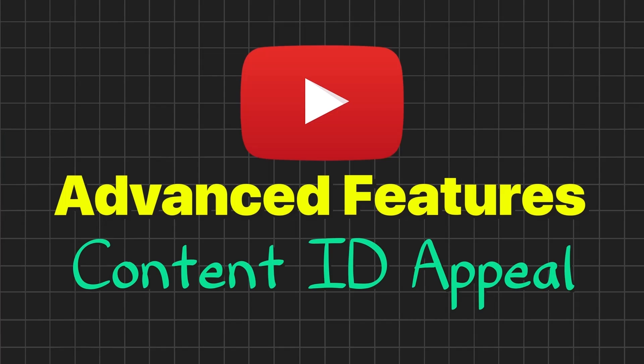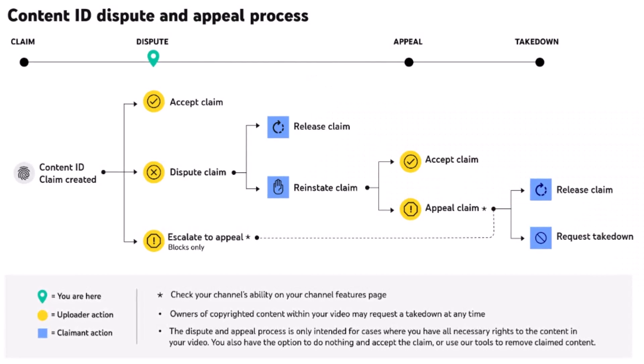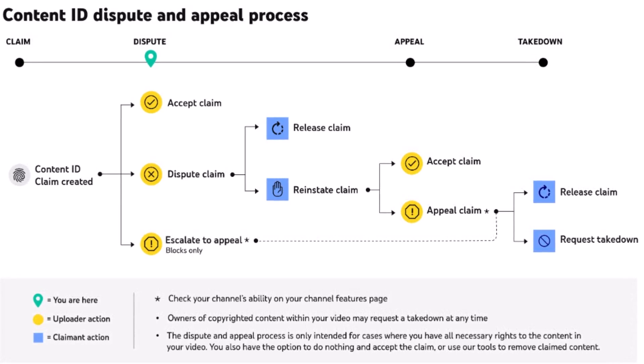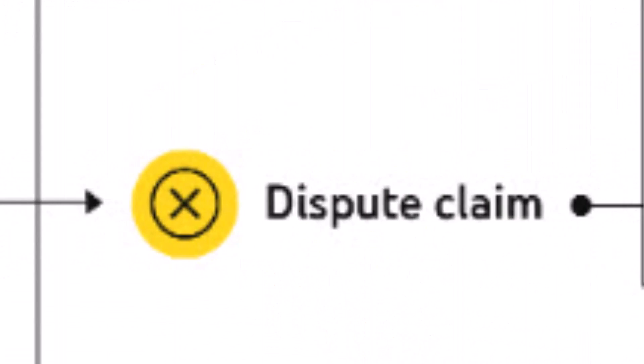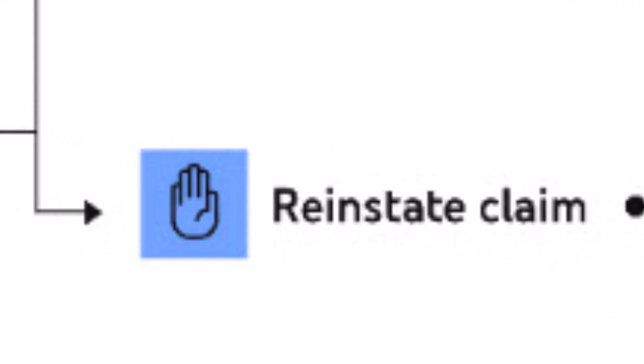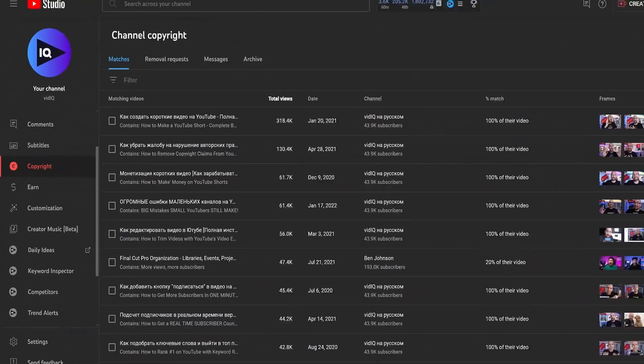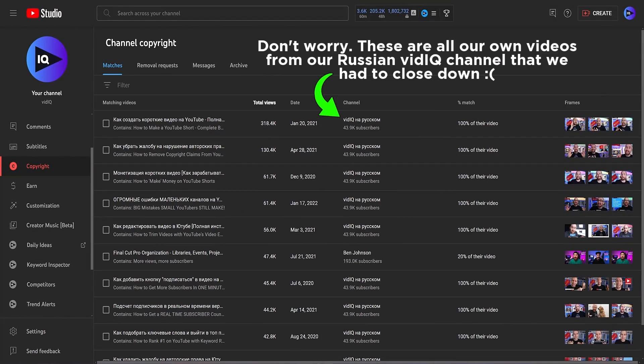You can use pinned comments for awesome community comments, collaborator shoutouts, or your own intentional calls to action. With advanced features, if any of your videos get a Content ID claim, you can dispute it if you have a valid reason. Content ID appeal is the precursor to Content ID claiming, when you can protect your content from others ripping it off — you'll get that feature when you monetize your channel.